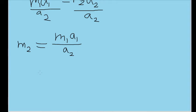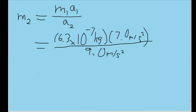Now let's substitute the values we have for accelerations and the mass of particle 1. And we get a mass for particle 2 of 4.9 times 10 to the negative 7th kilograms.